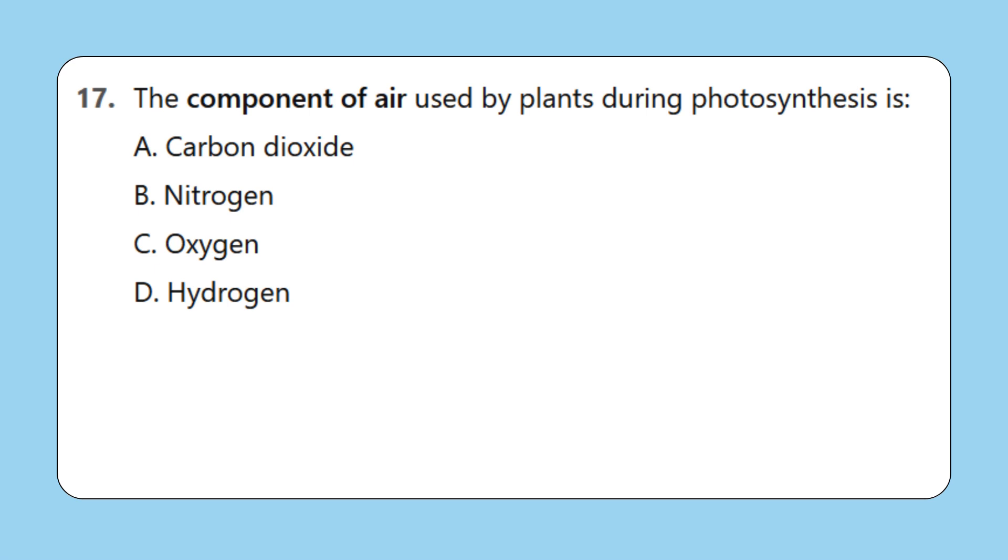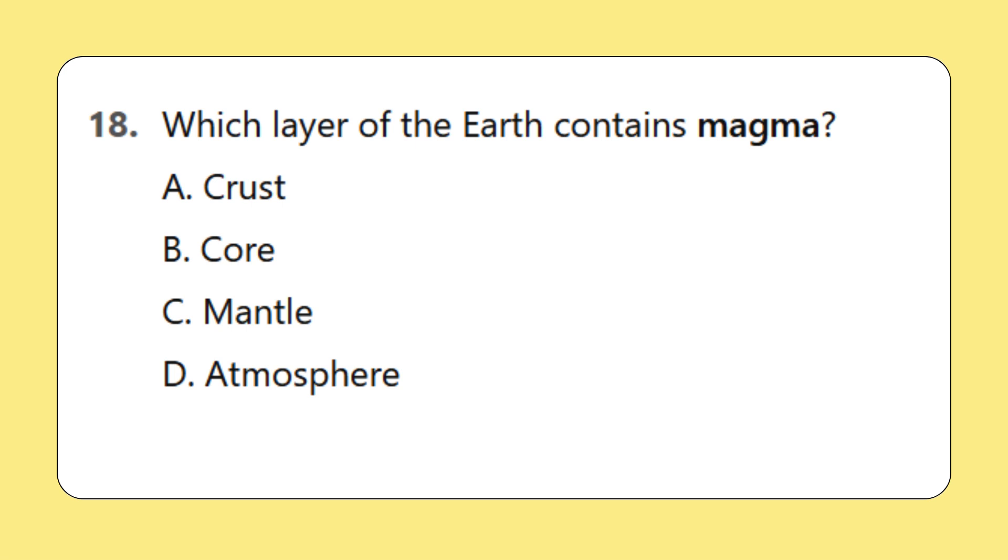Question 17: The component of air used by plants during photosynthesis is: A. Carbon dioxide. Question 18: The outermost layer of the earth is called: A. Crust, B. Core, C. Mantle, D. Atmosphere.